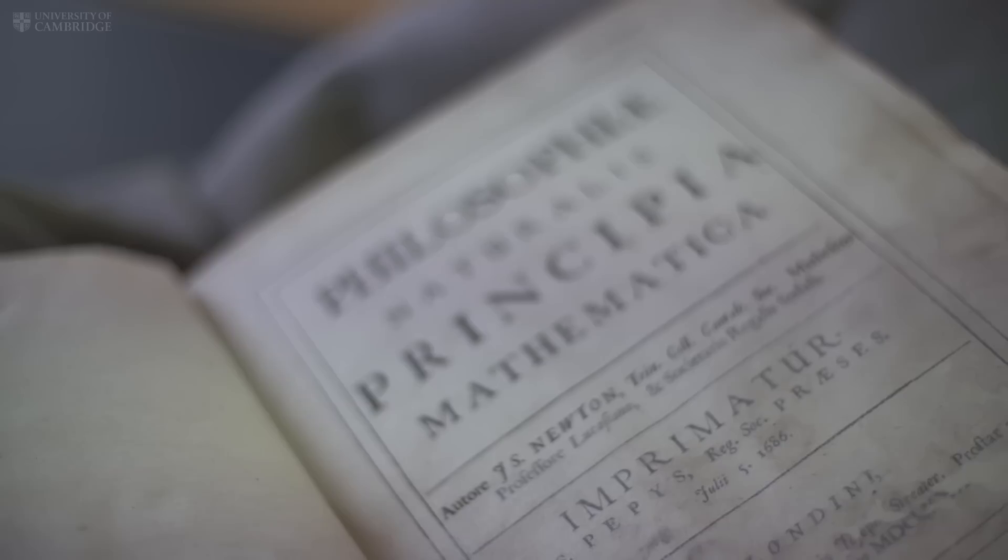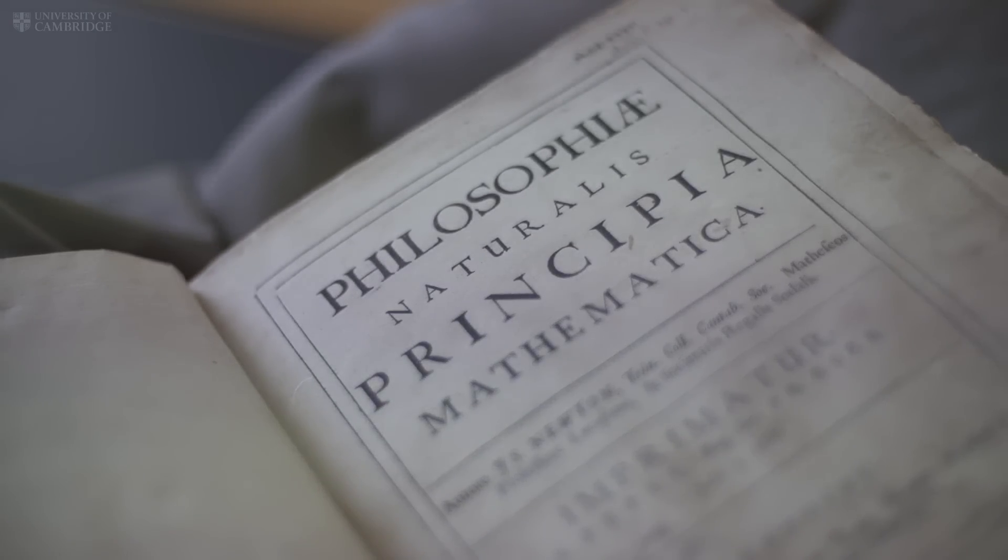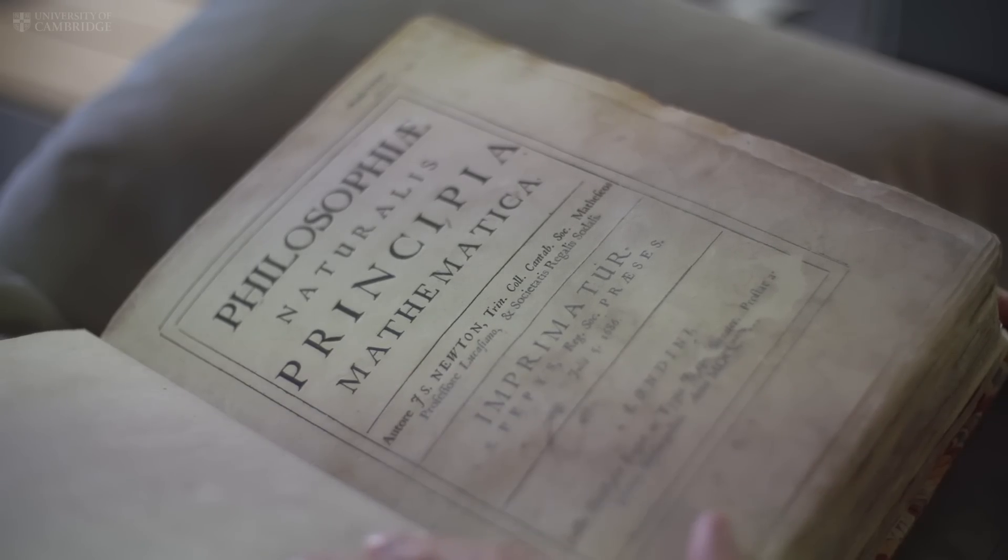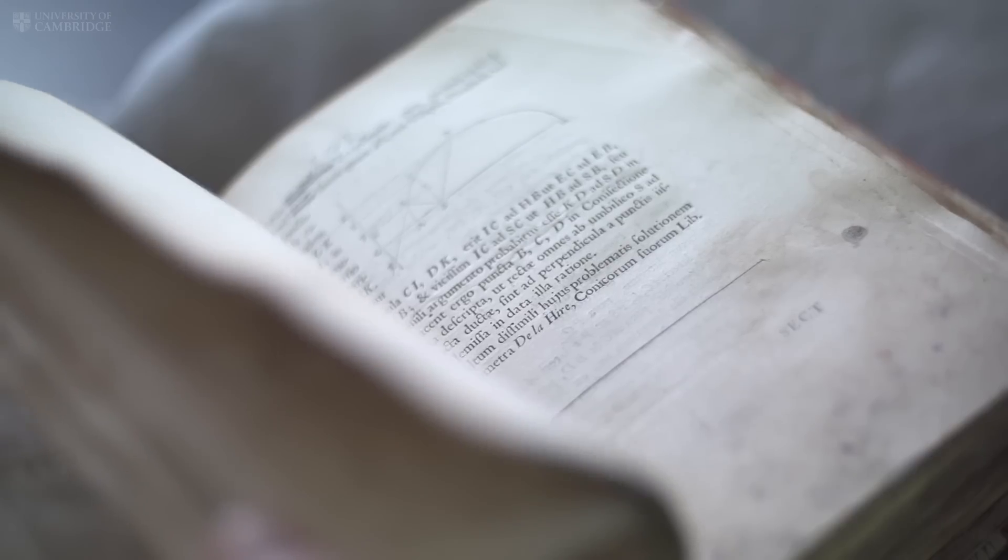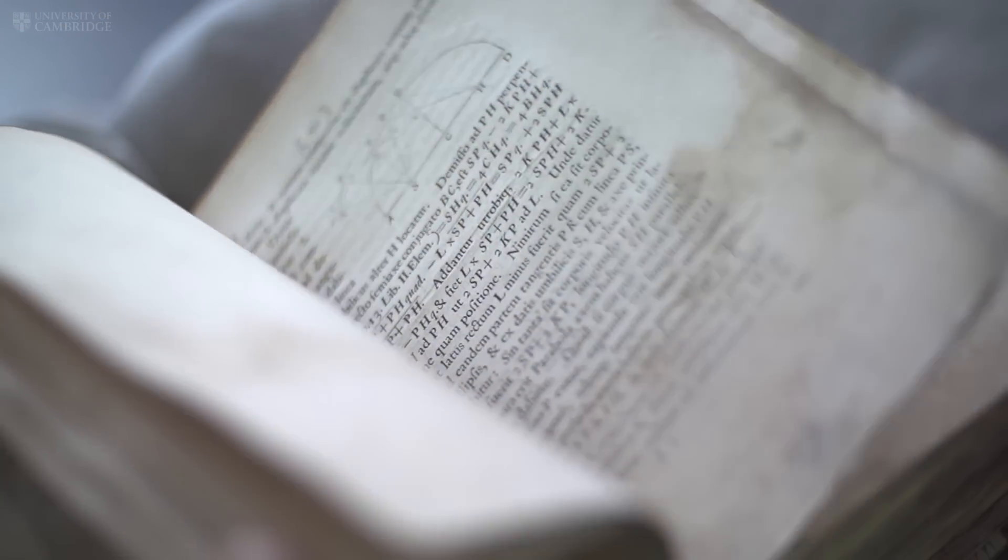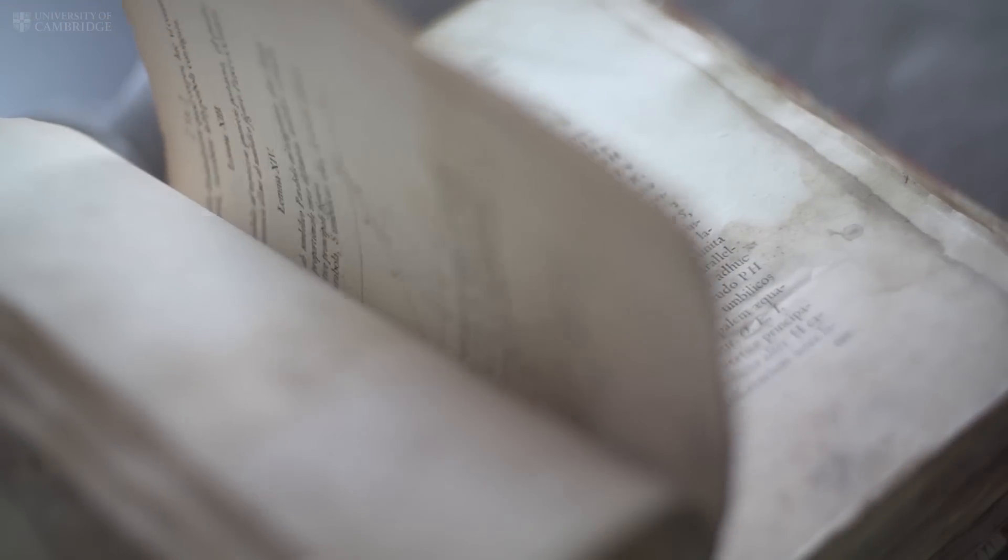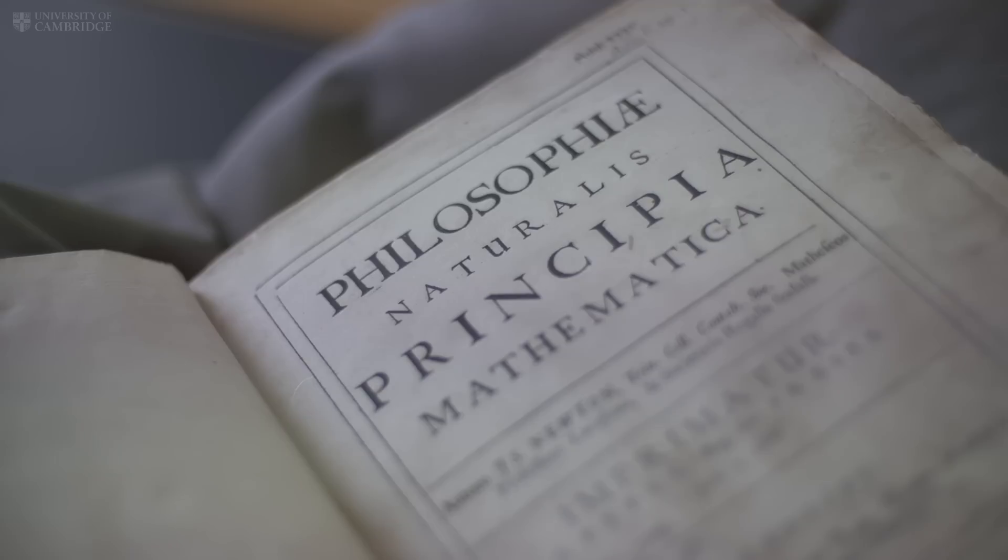We have here the first edition of Isaac Newton's Principia Mathematica, 1687, which is one of the most important of all publications in the history of science. The importance is greatly enhanced by the fact that it's Isaac Newton's own first edition. It is the great jewel in the crown of the collection.